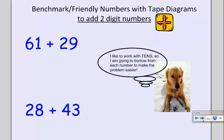Today we're going to use benchmark or friendly numbers with tape diagrams to add two-digit numbers. The idea is to take a harder math problem and make it easier. Scoop likes to work with tens. They function a lot like the ones do, but they're the next place value.